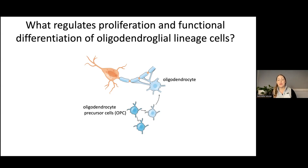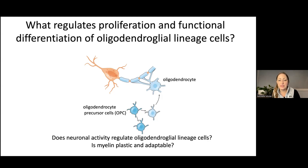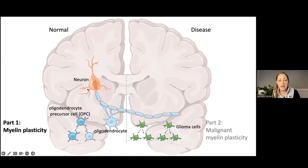This was a controversial idea because there are also clearly activity-independent modes of myelination — if you put an oligodendrocyte in a dish with any appropriately sized fiber, even formalin-fixed axons or nanofibers, it will myelinate anything of the right size. When I entered the field about 11 years ago, we really wanted to leverage tools of modern neuroscience to probe whether in awake and behaving mammals there might be activity and experience-regulated oligodendrogenesis — to ask whether myelin might be plastic and adaptable.